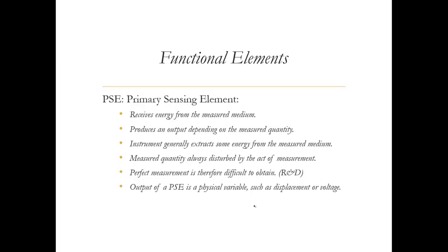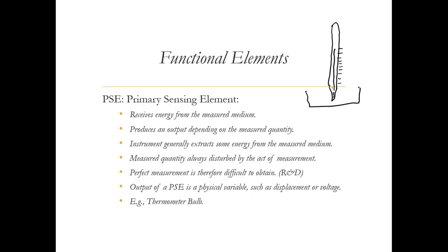The output of any primary sensing element is a physical variable such as displacement or voltage. For example, consider a mercury-based thermometer. We have a thermometer bulb with mercury inside and a capillary with readouts. When this thermometer is dipped in hot water, that bulb is the primary sensing element.